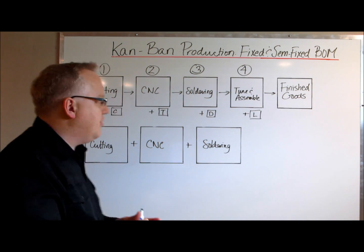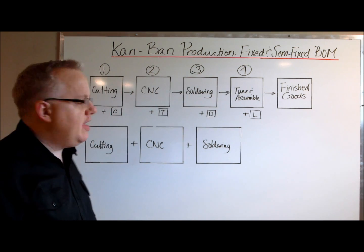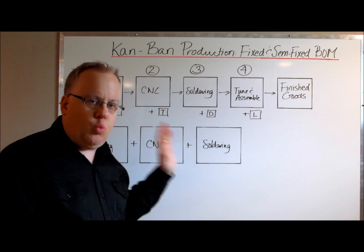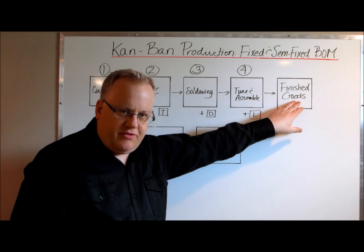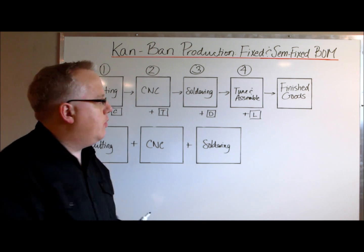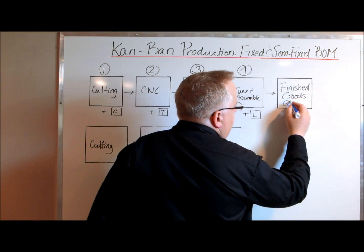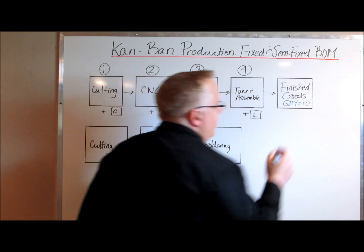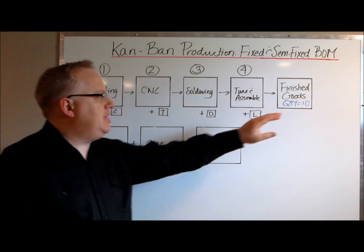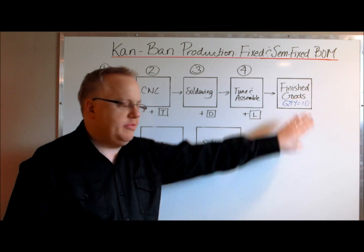Within a Kanban system, there are semi-finished products in each one of these four stages, all in a holding pattern — basically waiting to see what happens with the finished good quantity. Let's say you have a quantity of 10 units boxed and waiting to ship out to your customer. Everything begins and ends with what happens to this finished good quantity within the Kanban.